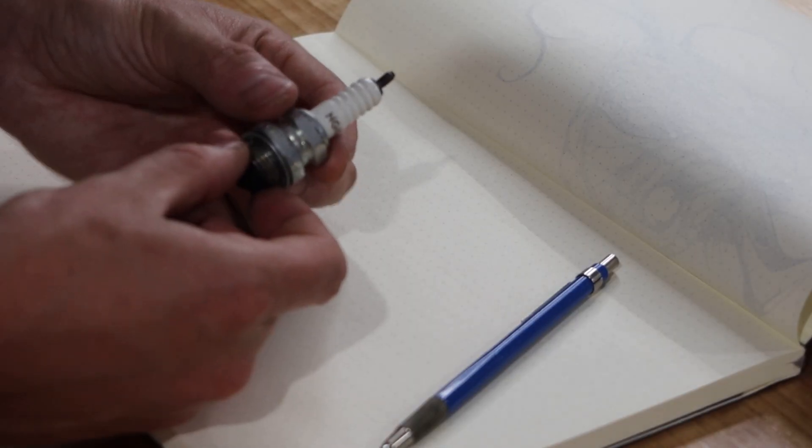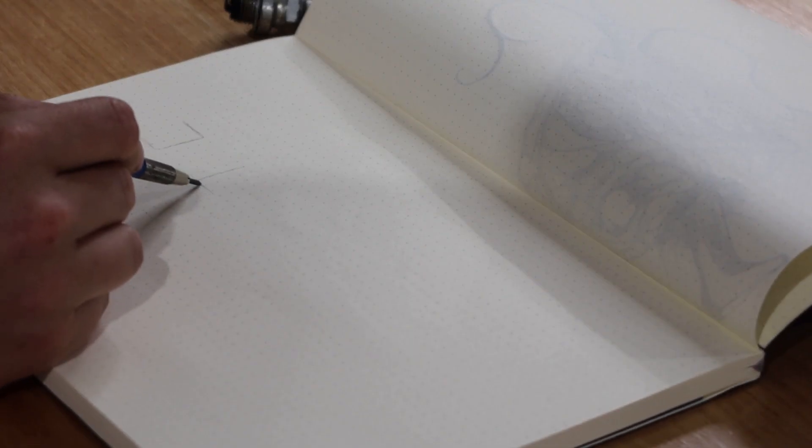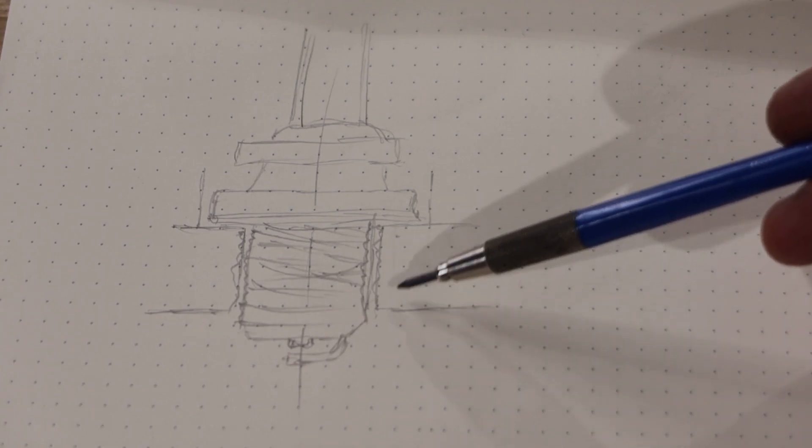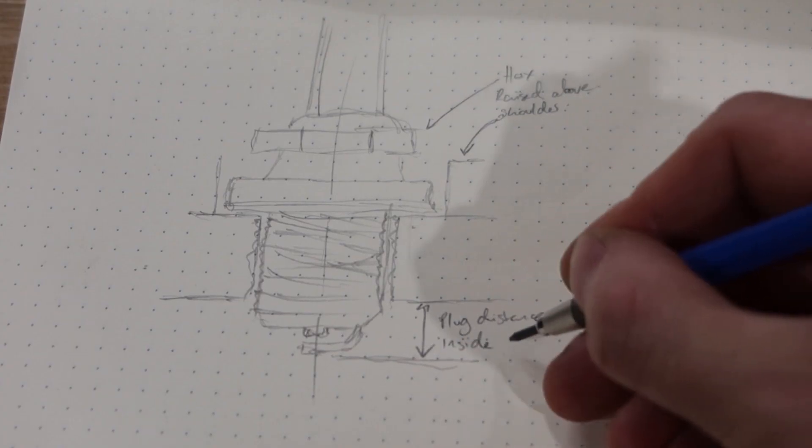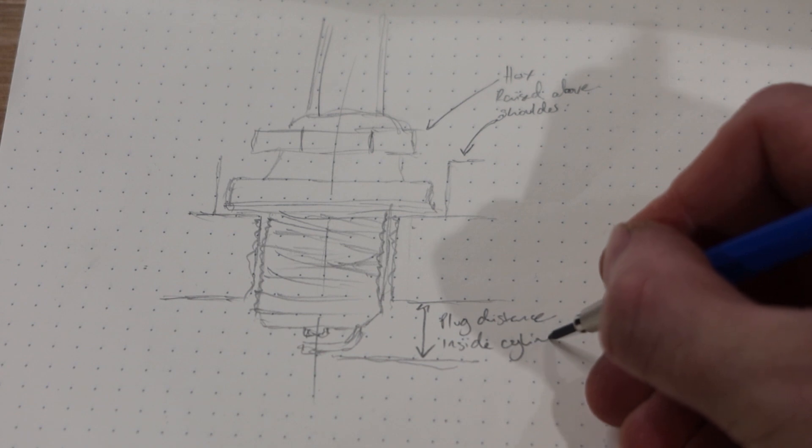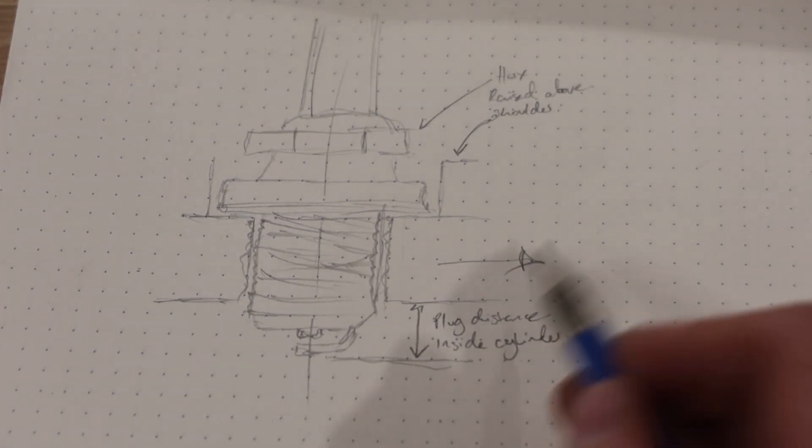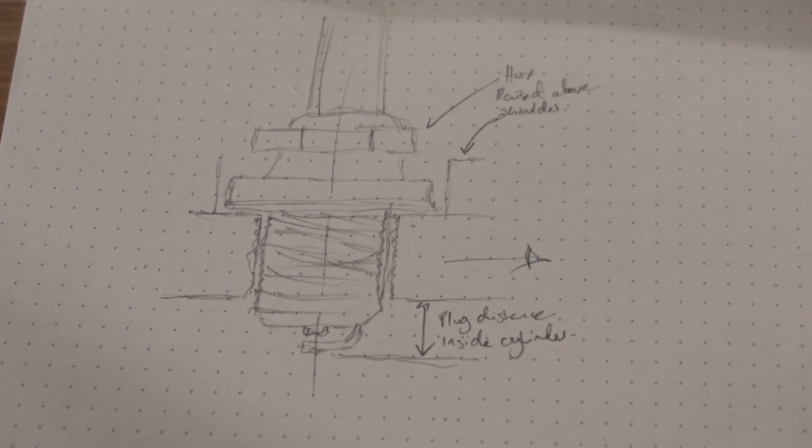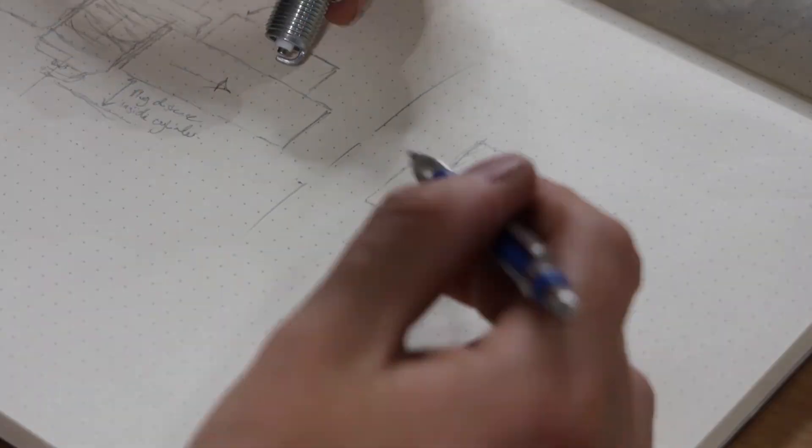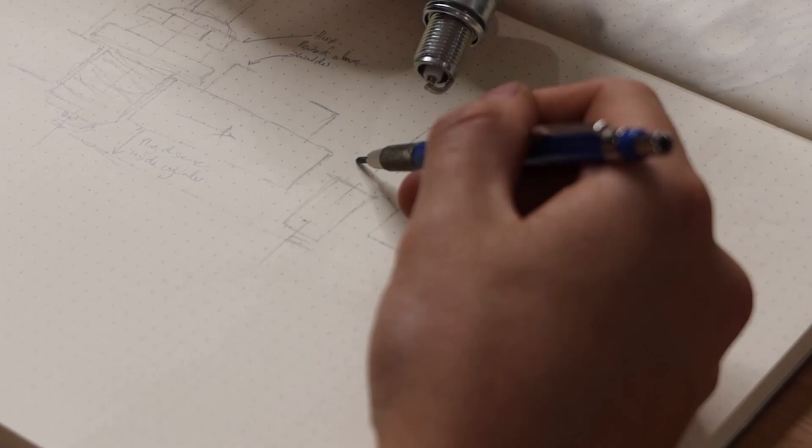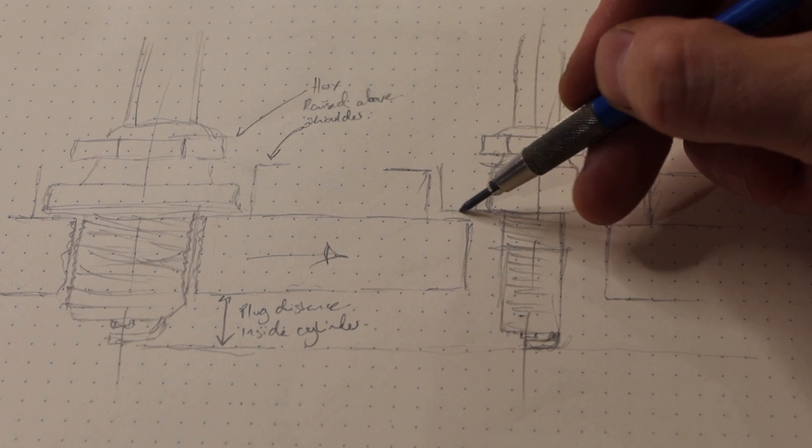Looking at the cross section, this is how the original plug sat within the head. We'd like the new plug to fit there, and also be the same distance within the cylinder. We need to consider this counterbore in the head which housed the original plug.